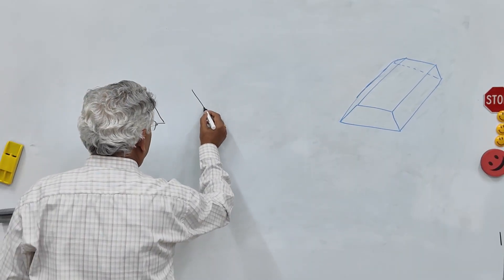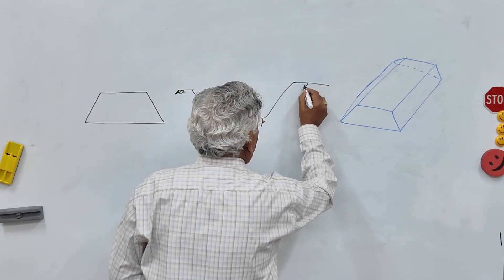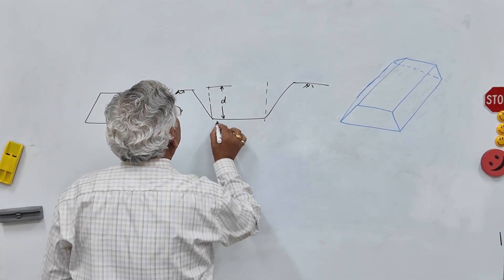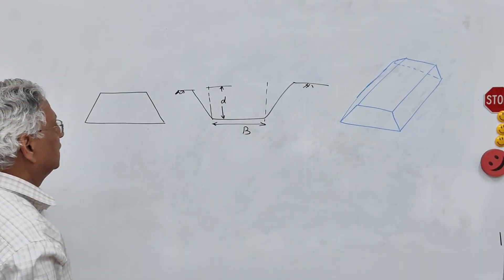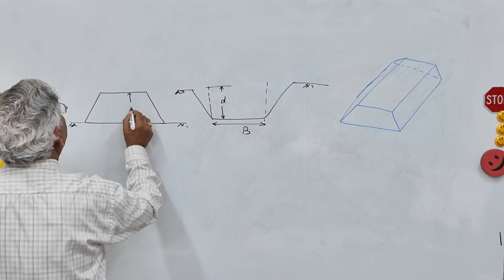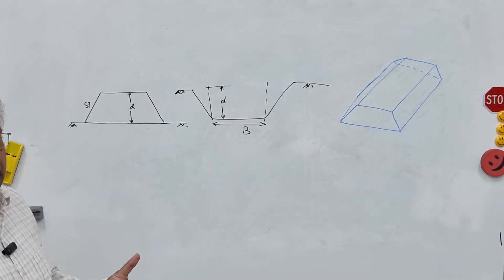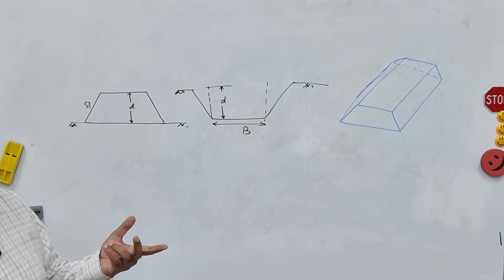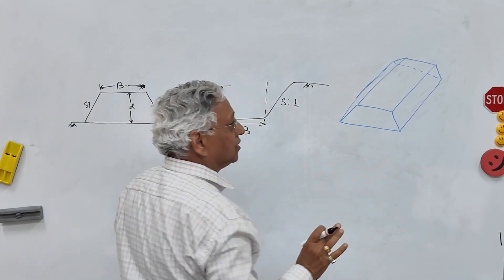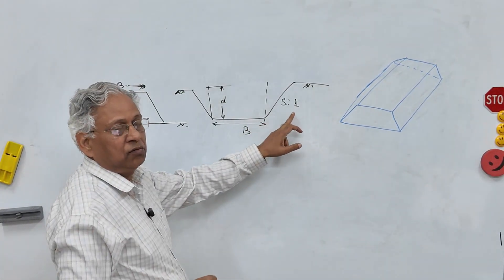If it is in embankment the section is like this, otherwise in cutting it is like this. This is the ground level and this is the depth of cutting. This is the formation width B. Here this is the existing ground and we are preparing the embankment of depth D. The side slope S is to 1, and it depends upon the type of soil — it can be 2 to 1, 1.5 to 1, or 2.5 to 1. This is the formation width B. Side slope generally in embankment is different from the side slope in cutting. Let us assume it is S to 1, horizontal to vertical.